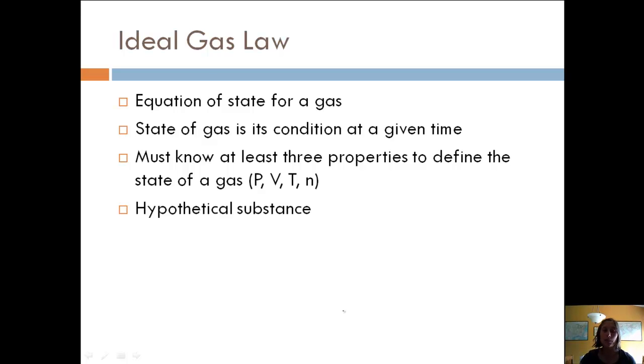An ideal gas is actually a hypothetical substance. It doesn't actually exist. Some gases can have ideal gas properties, but some don't. What you would do in a problem is assume ideal gas status unless you're told otherwise, so you can use this equation in most instances.